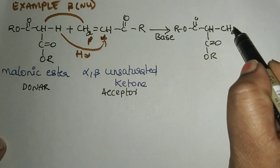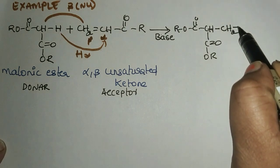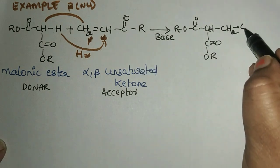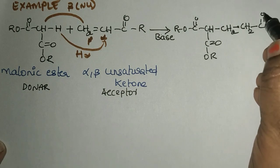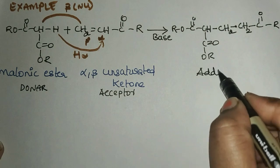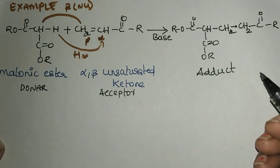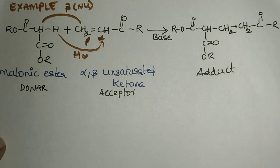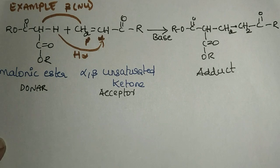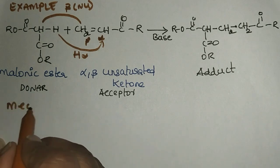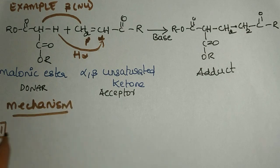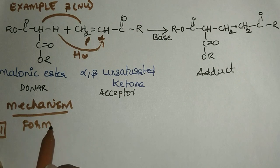When addition occurs at the CH₂, the double bond becomes a single bond. Hydrogen is added, giving the ester structure RO-C(=O)-CH₂-C(=O)-OR as the Michael adduct — the addition product obtained when the Michael donor and acceptor react in the presence of a base. Now let's look at the mechanism of the Michael addition reaction.